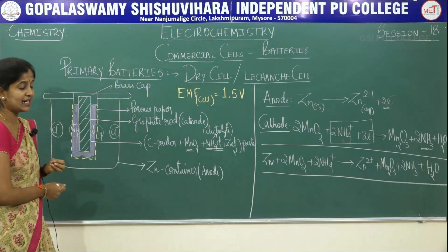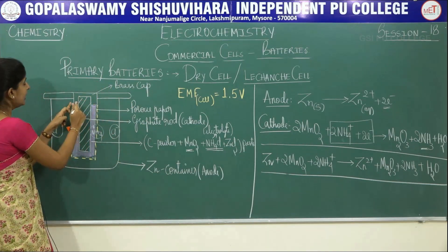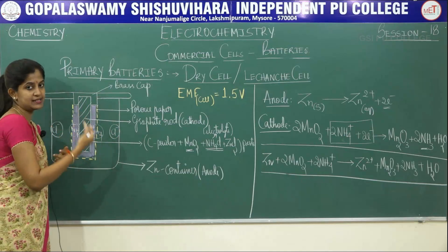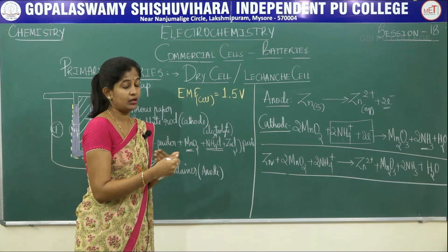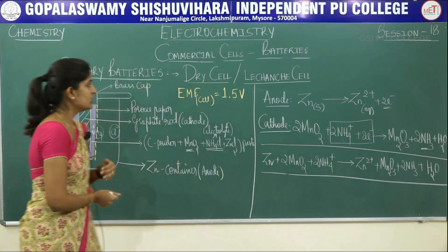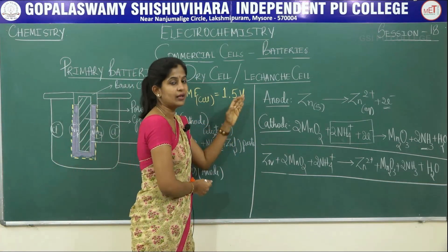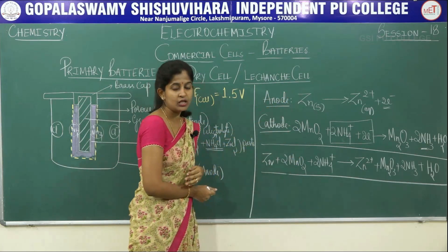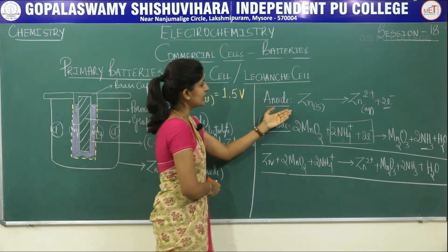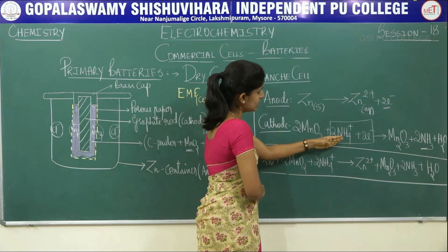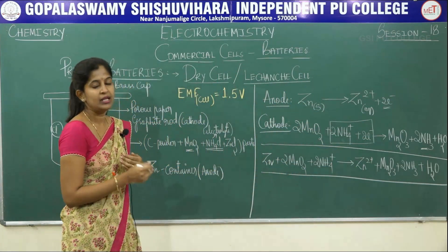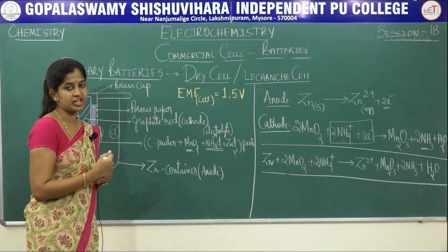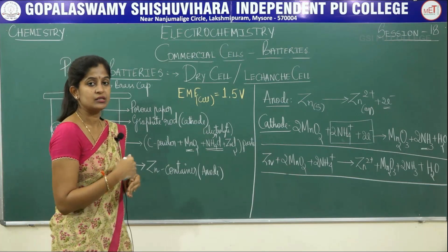Electric current passes from the zinc container to the graphite rod, and the brass cap on the graphite rod delivers electricity to the outer circuit — your clocks or other devices. These reactions at anode and cathode are irreversible: once zinc is oxidized and ammonium ions are reduced, the process cannot be reversed. Hence electrical energy cannot recharge this battery — it is completely a use-and-throw battery.